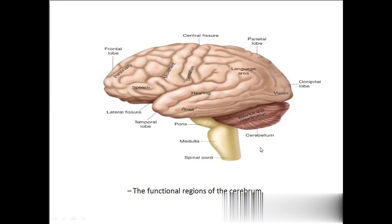The cerebellum is for balance and coordination. Here we have pons, medulla, and the spinal cord. Medulla oblongata continues as the spinal cord. Once again: the frontal lobe is for personality, speech, and movement; the parietal lobe is for sensation and language area; the occipital lobe is for vision; and the temporal lobe is for hearing and smell. The cerebellum is for balance and coordination. The brainstem consists of pons, medulla oblongata, and the spinal cord.